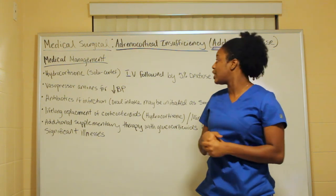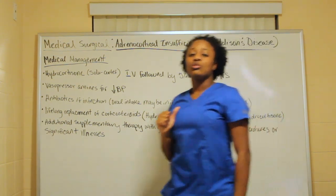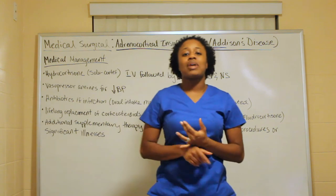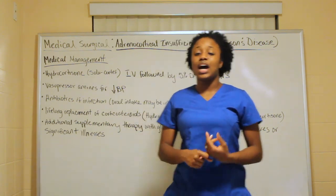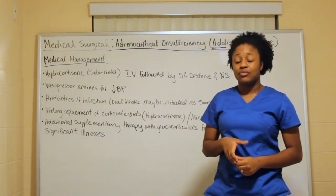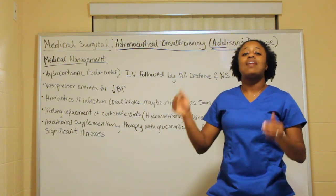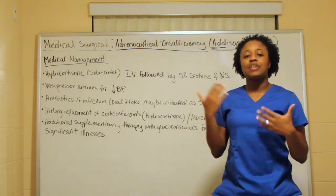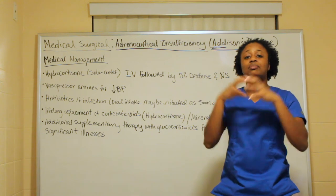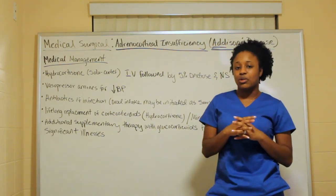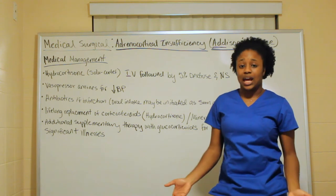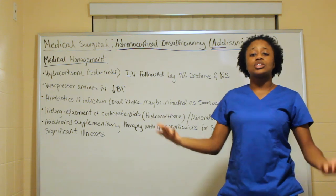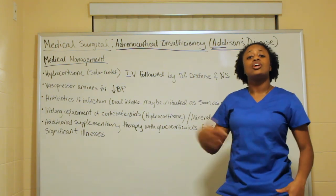The D5 normal saline replaces low glucose and low sodium levels. For low blood pressure, especially in Addisonian crisis when fluids or bolus aren't sufficient, vasopressors are used. Options include norepinephrine (also known as Levophed), epinephrine, and neosynephrine — multiple vasopressors can help increase blood pressure depending on what the doctor prescribes.